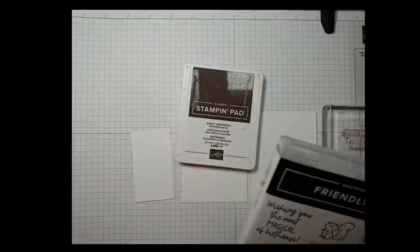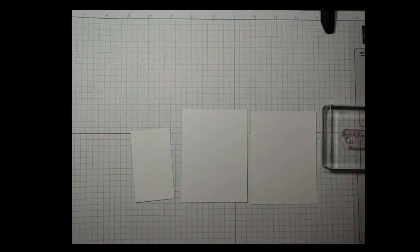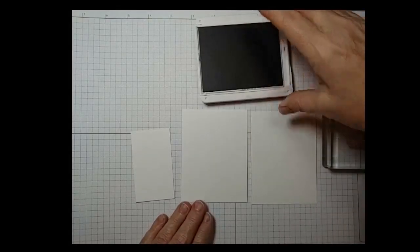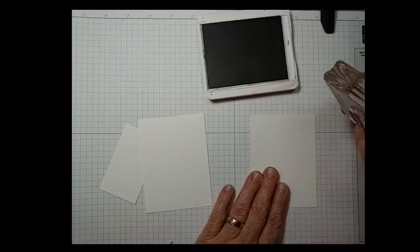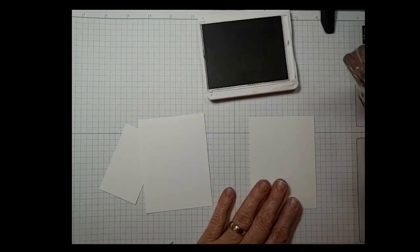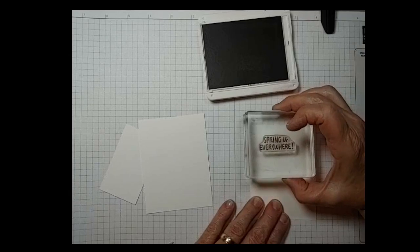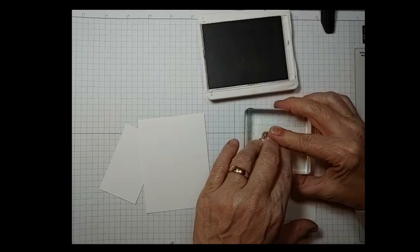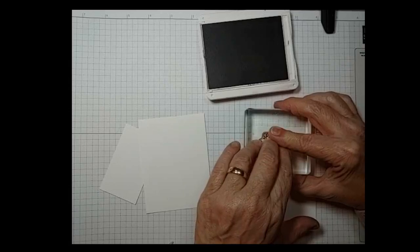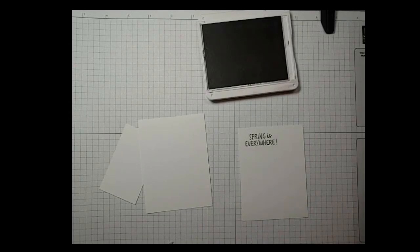I'm going to start off with spring is everywhere. I need the little gnome with the flowers on him and I need the squirrel, the flowers, the mushroom, and the little bird. So my sentiment is just going to go in this upper left corner, aiming for about a quarter of an inch in and a quarter of an inch down.